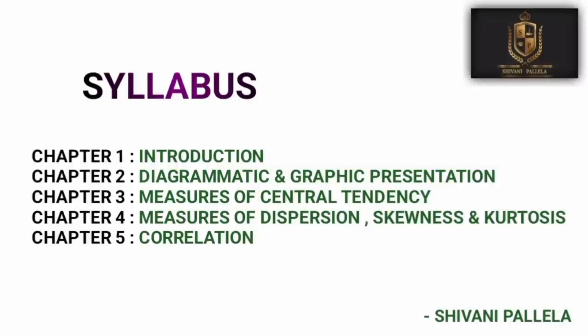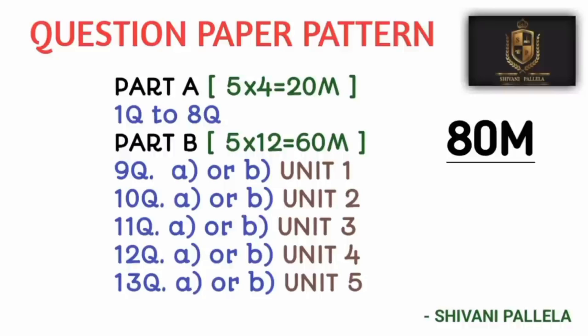Coming back to the syllabus, there are a total of five units. Unit one is Introduction, unit two is Diagrammatic and Graphical Presentation, unit three is Measures of Central Tendency, unit four is Measures of Dispersion, Skewness and Kurtosis, and unit five is Correlation.